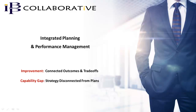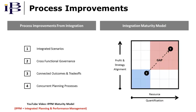This video provides an overview of connected outcomes and trade-offs, and the ability to resolve situations where strategy is disconnected from financial and operational plans. In a separate video, we provided a detailed description of the maturity model shown on the right side of the screen, which addresses capability gaps and integration-enabled process improvements. In this one, we'll focus on connected outcomes and trade-offs.